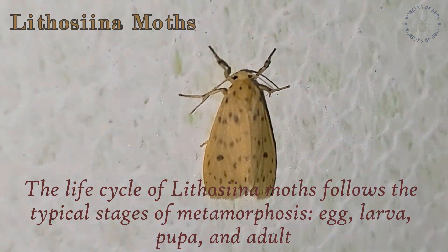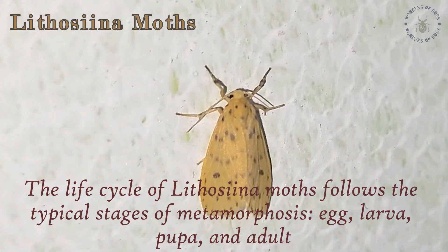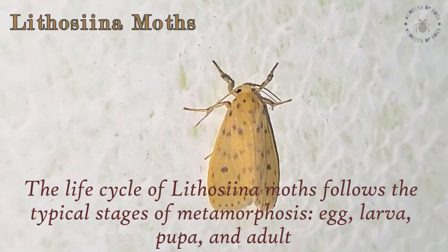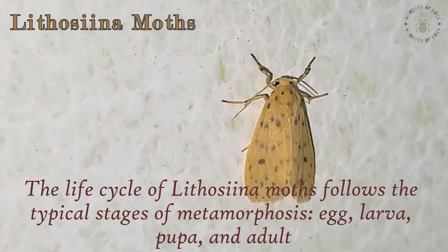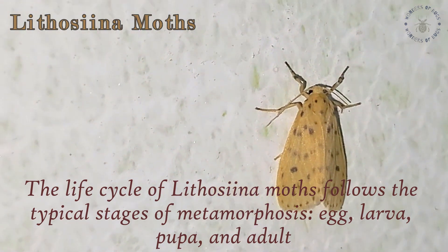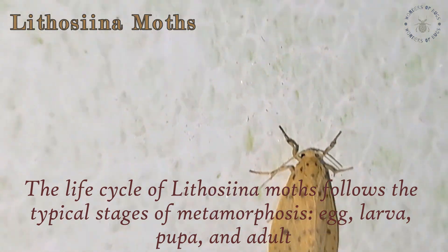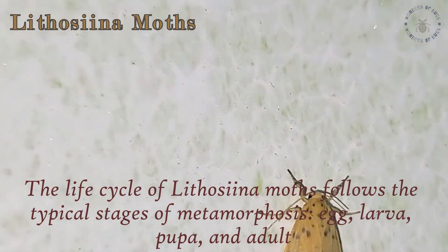The life cycle of Lithosiina moths follows the typical stages of metamorphosis: egg, larva, pupa and adult.